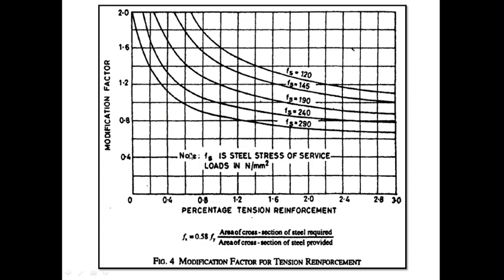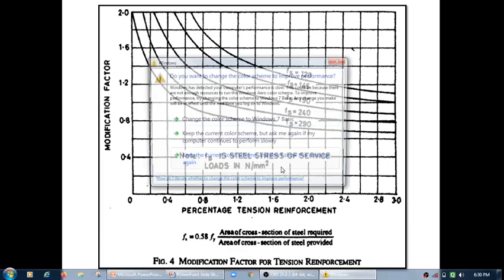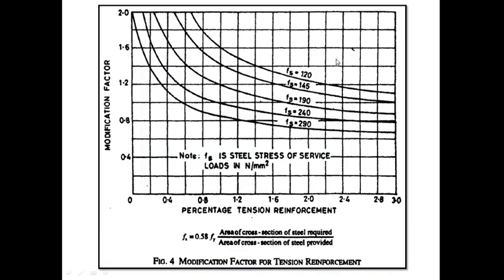This graph is given for 5 curves: for FS 120, FS 145, FS 190, FS 240, and FS 290, where FS is the steel stress at service loads. That means, it is the stress in the reinforcement of the RCC element at service condition or under the working loads.